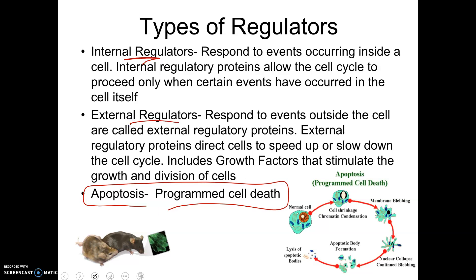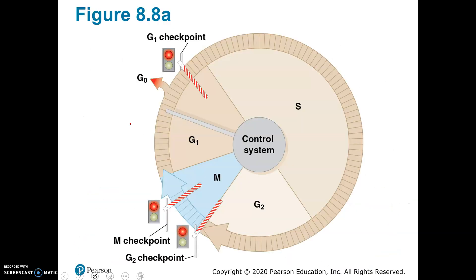External factors also tell a cell what to do. For example, again, if you have a cut, signals will be sent to the cells in that area saying, hey, we need to form some scar tissue to heal the damage of this cut. So there's internal signals and there's external signals, but the bottom line is it's just factors that control cell division.